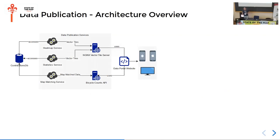For publication, we have a heat map service and some statistics that we publish. We also try to do map matching to publish those results. We won't publish the raw GPS data at the moment — this all goes through some form of anonymization. It's of course never 100% anonymized, but you shouldn't be able to identify individuals anymore.